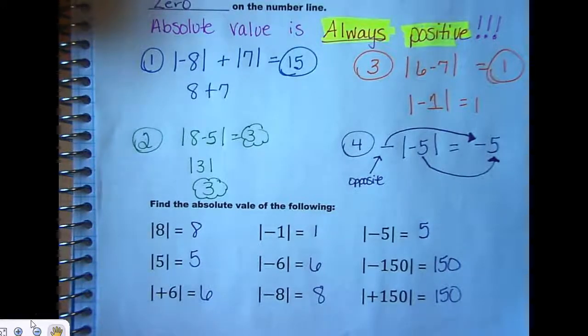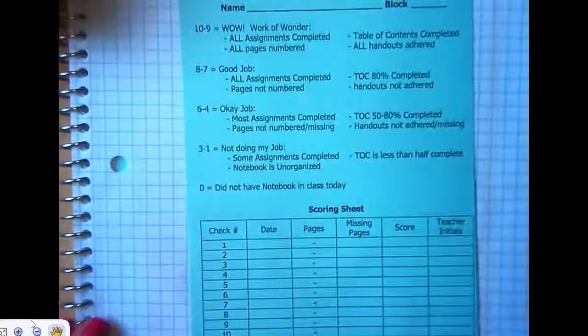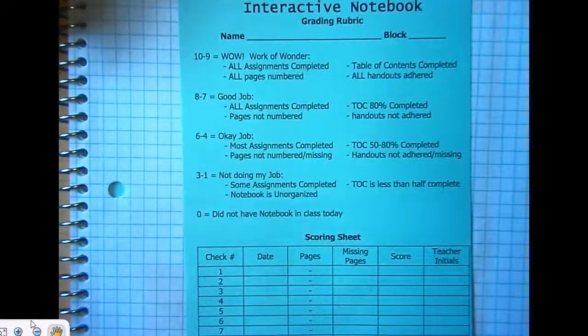Anybody still writing? Give it another minute. And I want you to turn in your journal to the page that has the grading rubric for your journal. It's a half blue sheet in the front, near the front. I want you to look at that for just a minute. We're going to talk about it. Let's look at that half blue sheet.